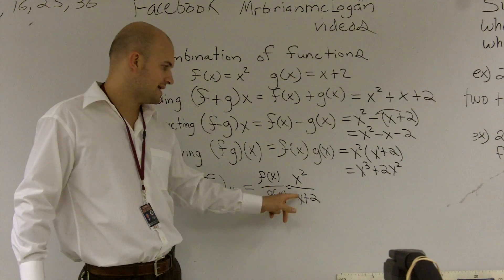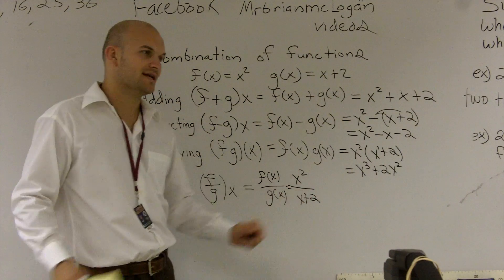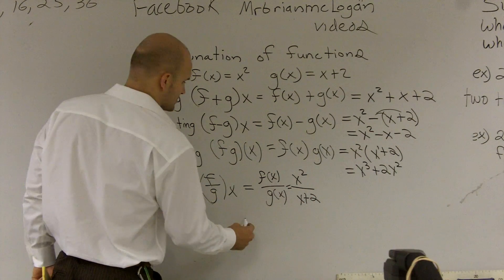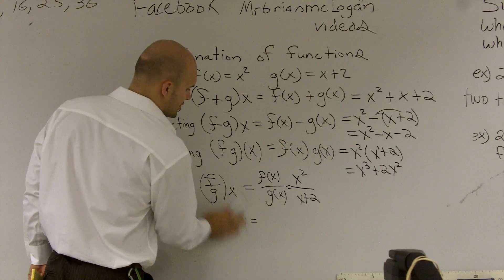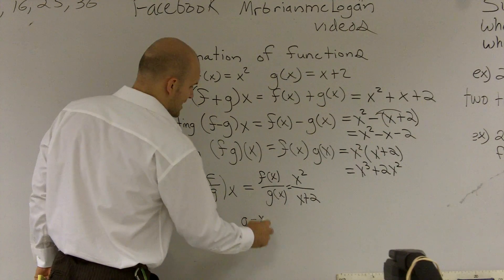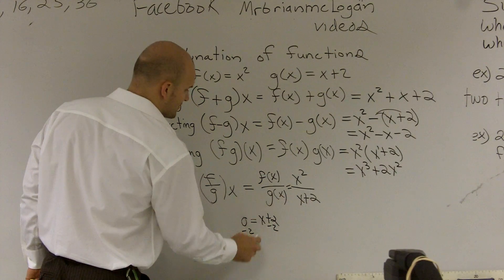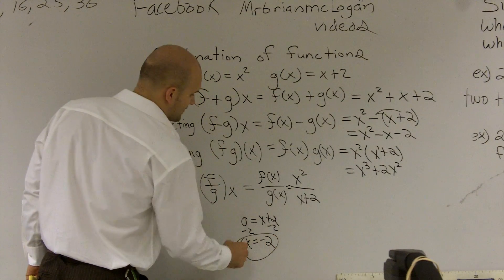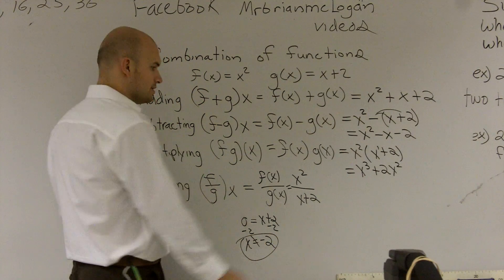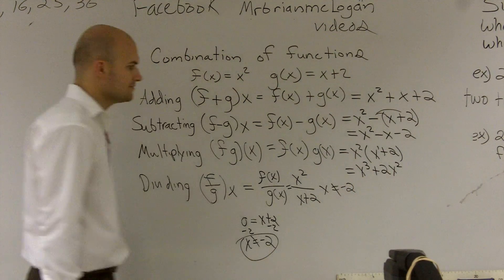And the reason being is, if you plugged in a negative 2 for this problem, negative 2 plus 2 would give you 0. And we cannot divide by 0. So to find out what values you cannot use, just say 0 equals x plus 2, whatever's on your bottom. And then when I subtract my 2 from my x, I obtain x equals a negative 2. So therefore, your function is defined for all values except for when x equals negative 2.